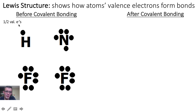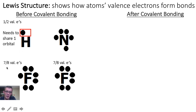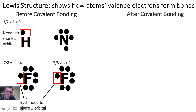Hydrogen has one valence electron in its first shell and it would need two in order to fill that first shell up, and so as a result hydrogen is going to have to share its orbital with another atom. These fluorines meanwhile each have seven valence electrons in their valence shell and they need eight valence electrons to become stable, and so they will have to share one of their orbitals as well.